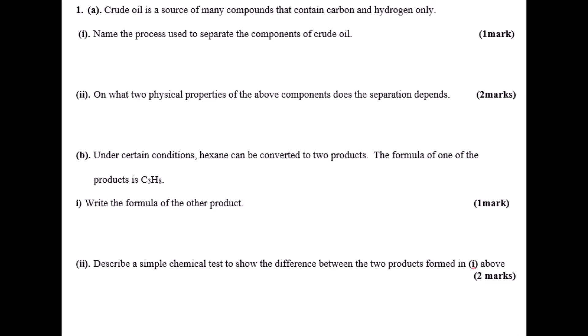Question one, like with this paper, it's a question on organic chemistry. Crude oil has been the source of many carbon and hydrogen compounds. You name the process that can be used to separate the various components of crude oil, then give the two physical properties that make it possible for the components to be separated.